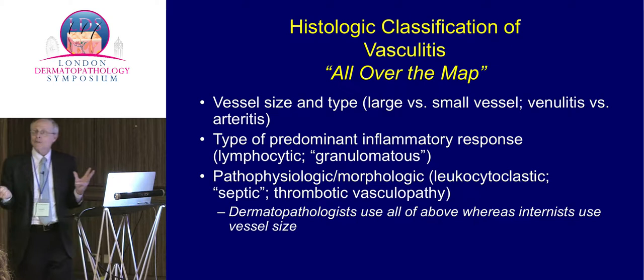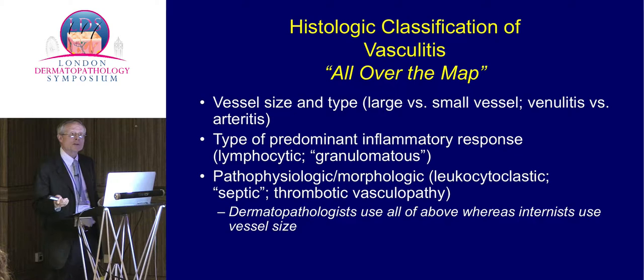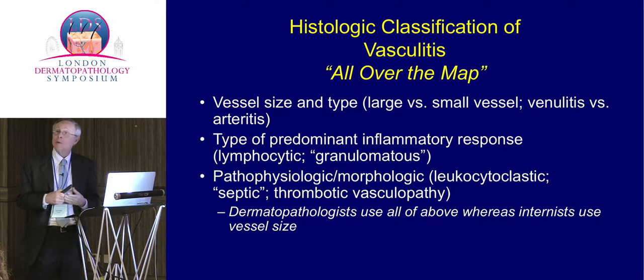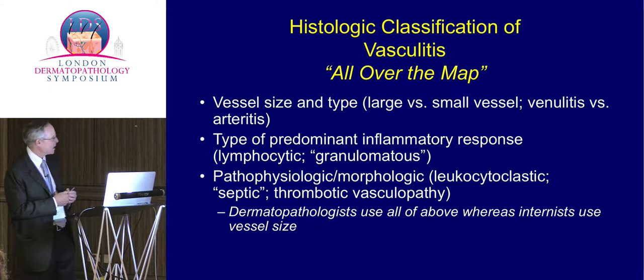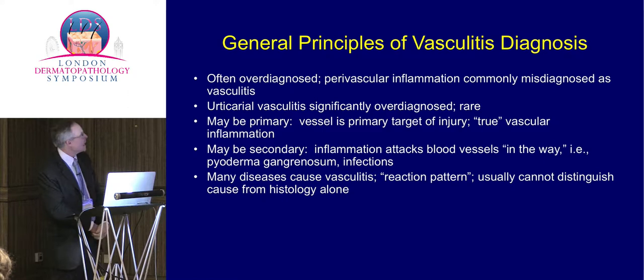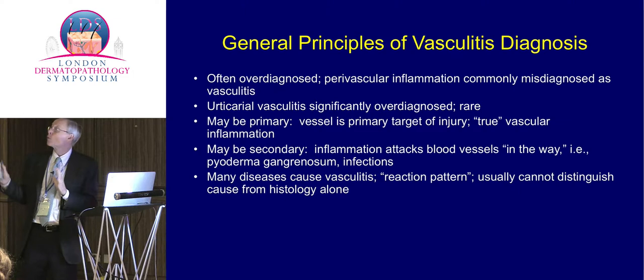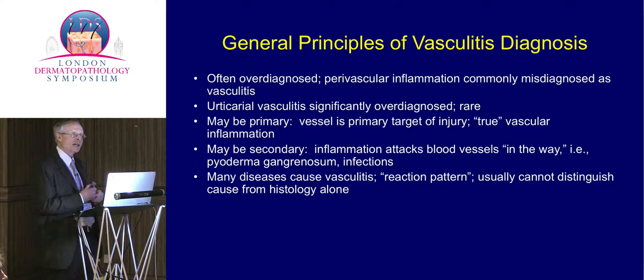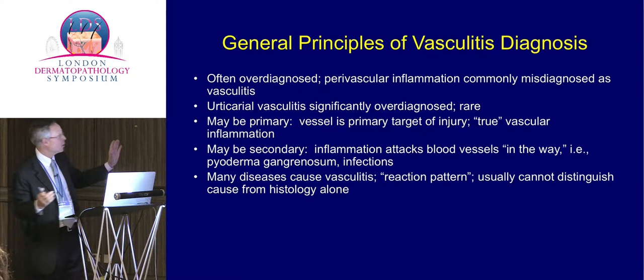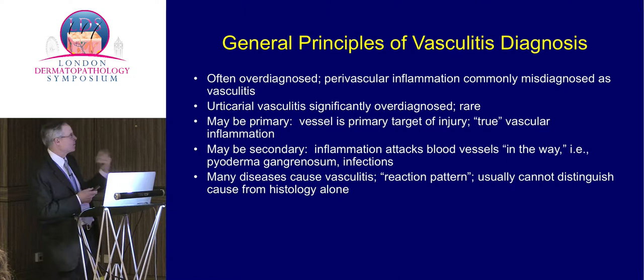Let's talk about vasculitis. When you look at the histologic classification of vasculitis, it's really pretty protean — depending on your specialty, you'll use a different classification. Rheumatologists like large versus small vessel vasculitis, though some say large blood vessels don't really live in the skin. We also talk about the type of inflammatory response, the pathophysiology — whether it's leukocytoclastic or immune complex versus thrombotic. One key principle: vasculitis tends to get overdiagnosed. Perivascular inflammation alone is not synonymous with vasculitis. You really need actual damage of the blood vessel with fibrin deposition. Urticarial vasculitis is way overdiagnosed — it's pretty rare.